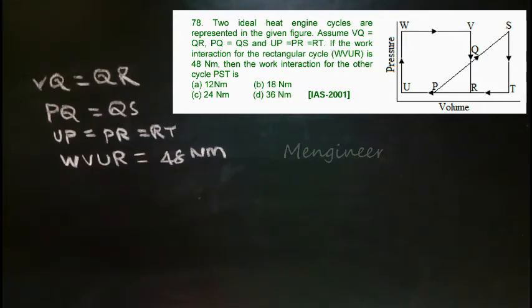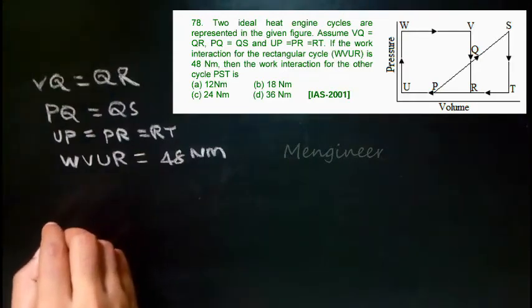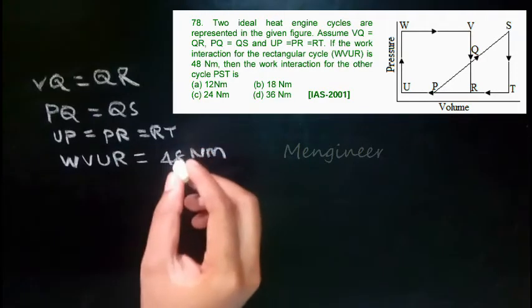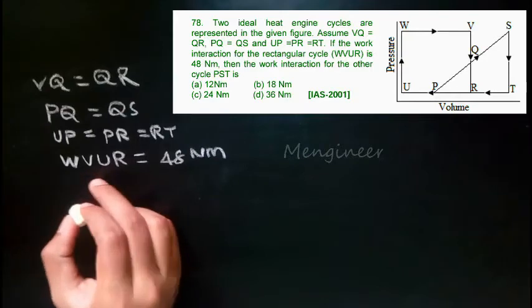Two ideal heat engine cycles are represented in the given figure. All these conditions I have given and written. You have to find the work interaction for this problem.